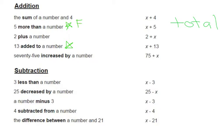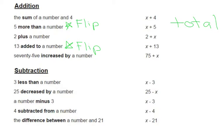Now if you see 'more than' or 'added to,' you're going to have to pay attention because these two mean that you're going to have to flip the order of the words when you translate to an expression. For example, 'five more than x' — the five is at the beginning of the phrase but at the end of the expression; '13 added to x' — 13 is at the beginning of the phrase but at the end of the expression.